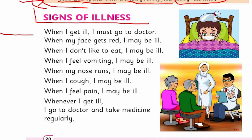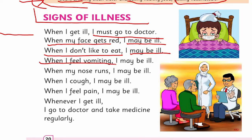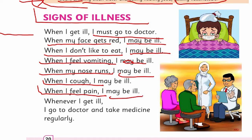Whenever I get ill, I must go to the doctor. The signs of illness are: Number one, when my face gets red, I may be ill. Number two, when I don't like to eat, I may be ill. Number three, when I feel vomiting, I may be ill. Number four, when my nose runs, I may be ill. Number five, when I cough, I may be ill. Number six, when I feel pain, I may be ill.